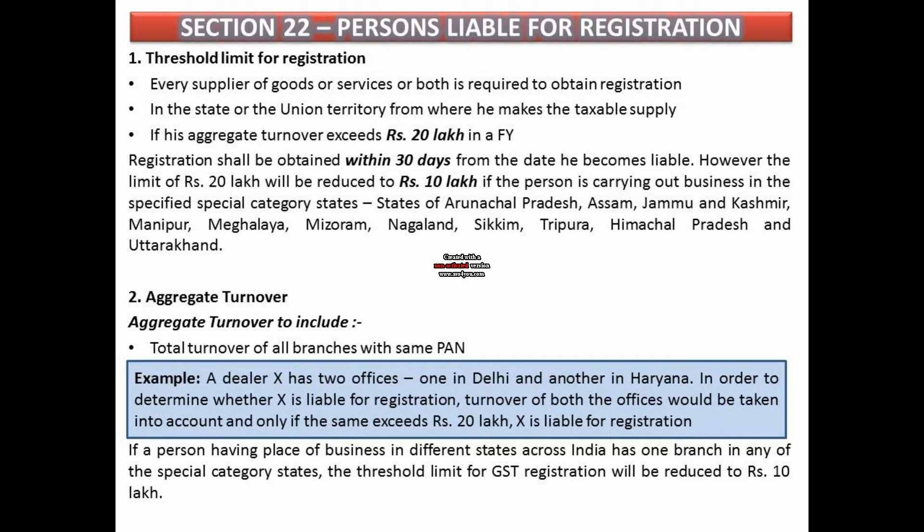The limit of Rs. 20 lakh is reduced to Rs. 10 lakh if the person is carrying out business in the specified special category states — that is, Arunachal Pradesh, Assam, Jammu and Kashmir, Manipur, Meghalaya, Mizoram, Nagaland, Sikkim, Tripura, Himachal Pradesh, and Uttarakhand. These are 11 specified category states.